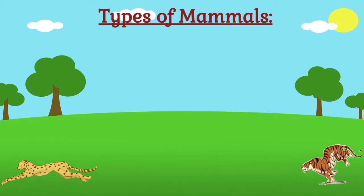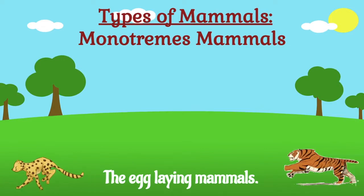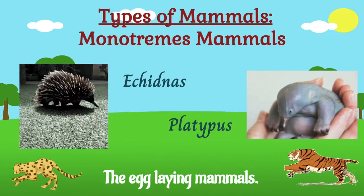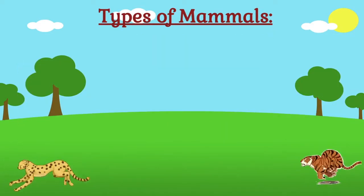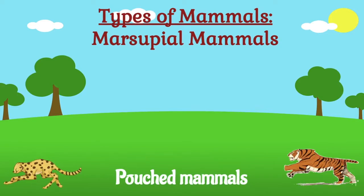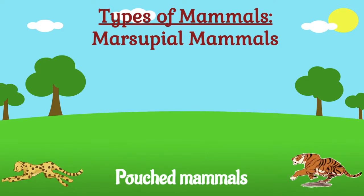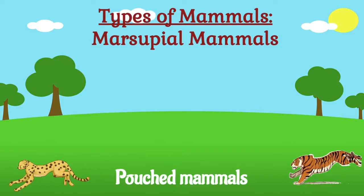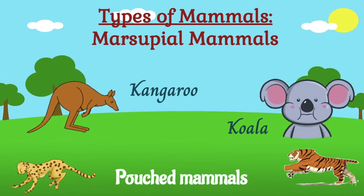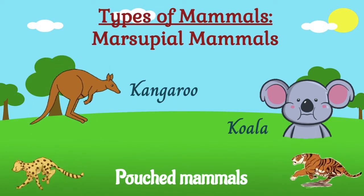Mammals are divided into three types. First is the monotremes, or the egg-laying mammals — animals under this type include echidnas and platypus. The second type are the marsupial mammals, or pouch mammals. They give birth to barely-formed offspring, and the baby grows in the pouch on the mother's belly. Some examples are kangaroo, koala, Tasmanian devils, wombats, and wallabies.